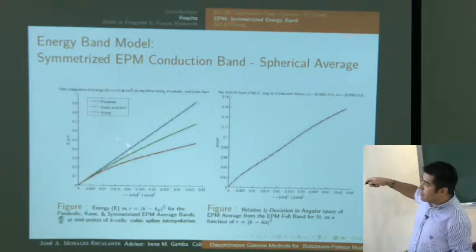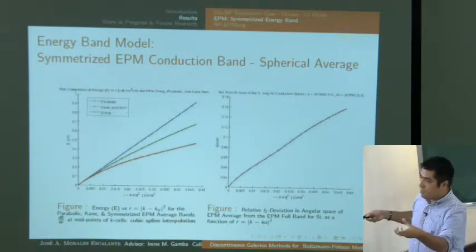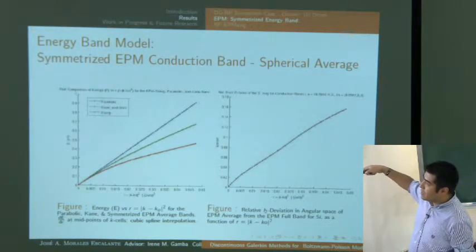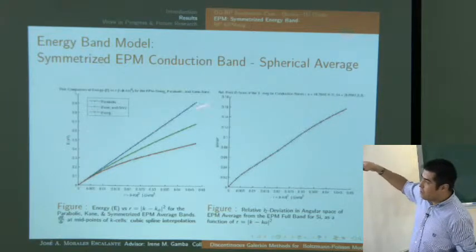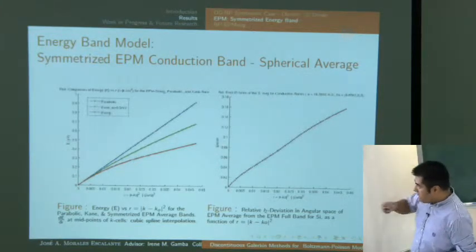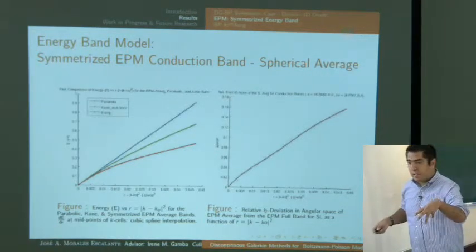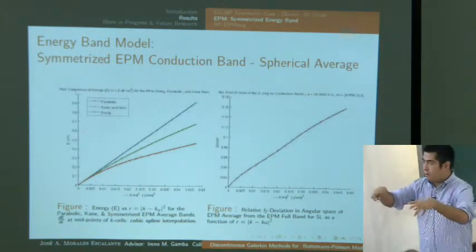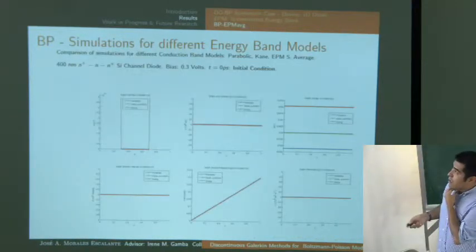A comparison plot of energy versus k-squared shows: the parabolic band is a straight line, the Kane band model is a first-order perturbation, and the spherical average of the EPM gives a different curve. The relative L2 error of the spherical average with respect to the full energy band increases as you go farther from the origin, which is expected.